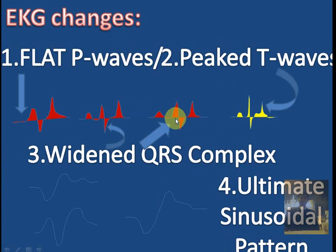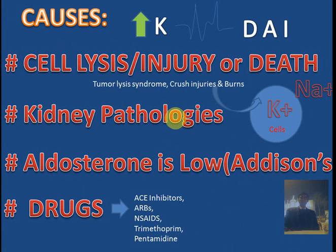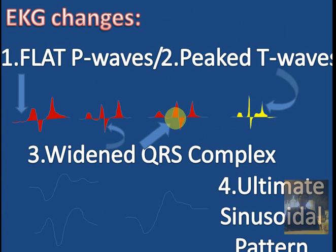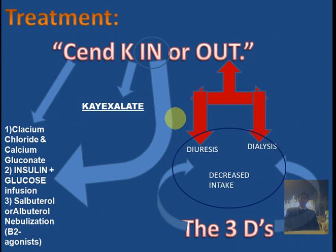To summarize: causes include cell lysis, kidney pathologies, low aldosterone, and drugs like ACE inhibitors, ARBs, NSAIDs, trimethoprim, and pentamidine. EKG changes include flat P-waves, peaked T-waves, and widened QRS complexes. Treatment: send potassium in or out — use calcium or kayexalate, insulin and glucose infusion, beta-2 agonists, diuretics, dialysis, and decreased intake.